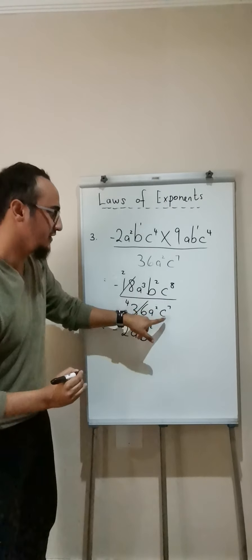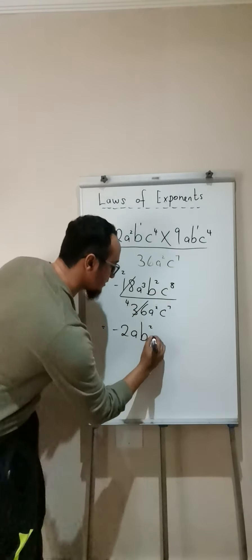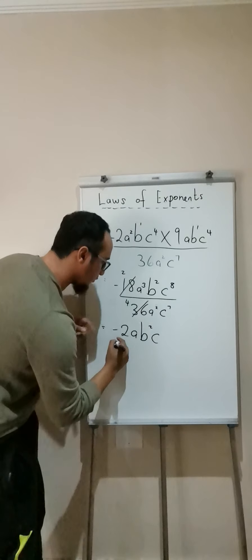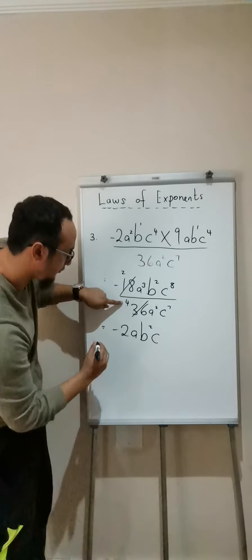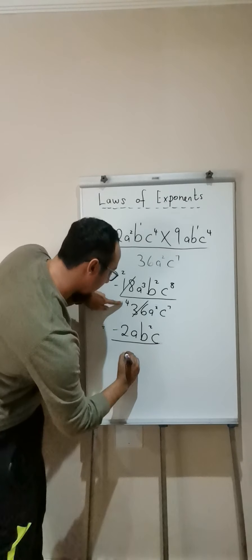C to the power of 8 divided by 7 is C to the power of 1. Do I need to write it down? No. What do I have left? The 4 over there. Divided by 4.